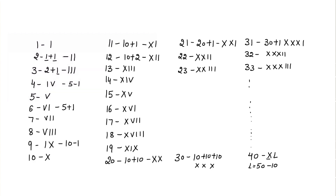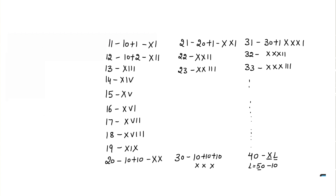40 is represented as XL — we represent 10 with X and 50 with L, so 40 is 50 minus 10, written as XL. 41 can be written as 40 plus 1, represented as XLI. 42 is XLII.